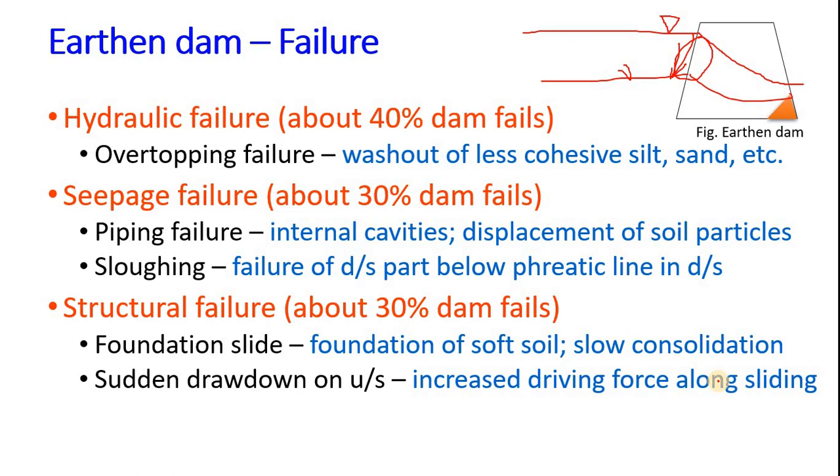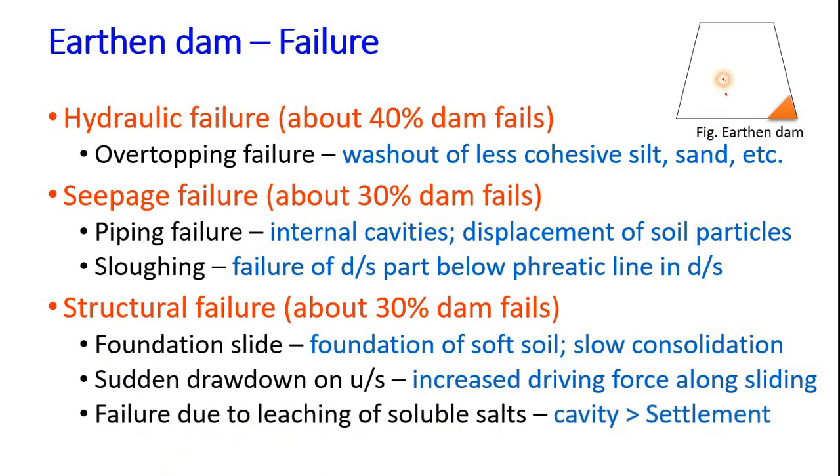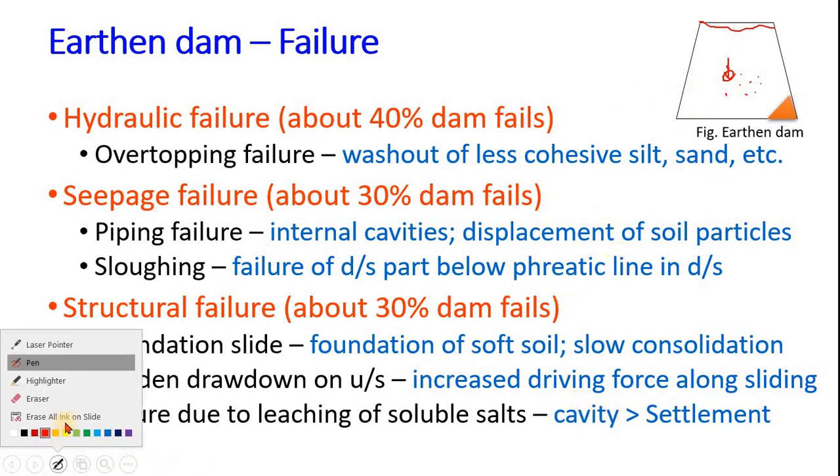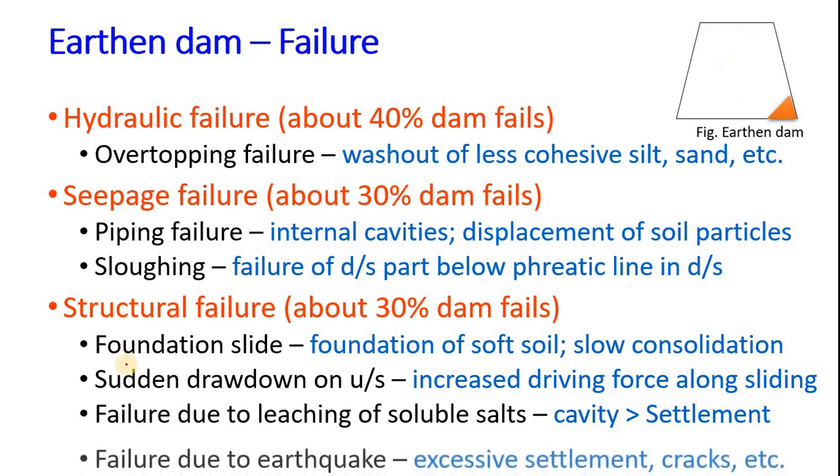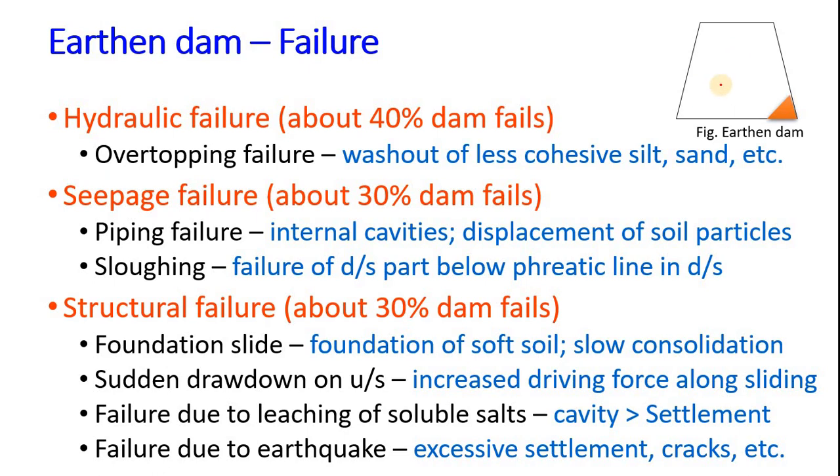It will give a driving force along the sliding face, so this will pull the face of the dam and cause failure. Now failure due to leaching of soluble material: when earth materials are compacted here, some organic materials may be present. They decay with time and leave cavities. These cavities, suppose this cavity is formed, then the soil above it will settle downward, and in this way the dam will have settlement and this settlement causes failure. Now failure due to earthquake: excessive settlement or cracks due to earthquake develop and this causes failure of the dam.